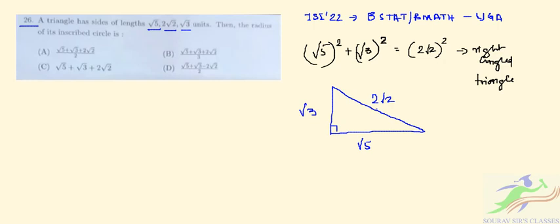2 root 2 is the hypotenuse. If we consider this side as a, b, and c, so it will be a square plus b square equal to c square. And what is our r? r is the delta by s.